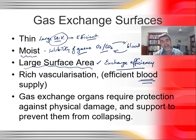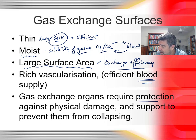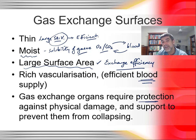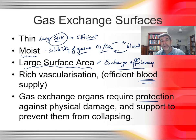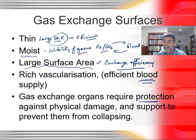Gas exchange organs need to be protected — it's very important they aren't physically damaged, and we also need to support them to prevent collapsing. That's one of the problems with whales when they beach themselves: the mass of their bodies, which is supported by the buoyancy of water, is not supported by air on land, and as a result that just squeezes all of the air out of their lungs.